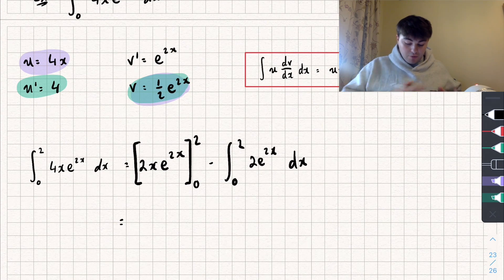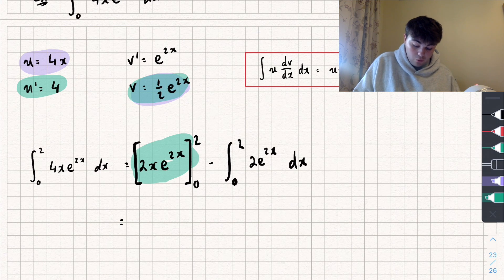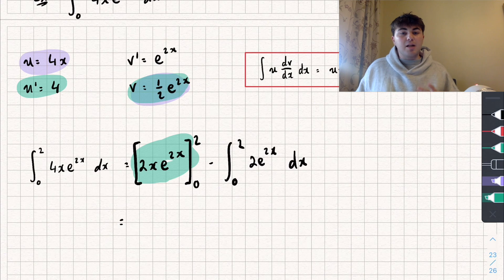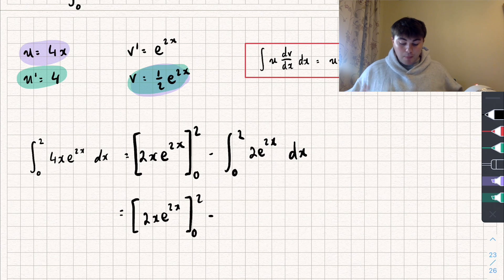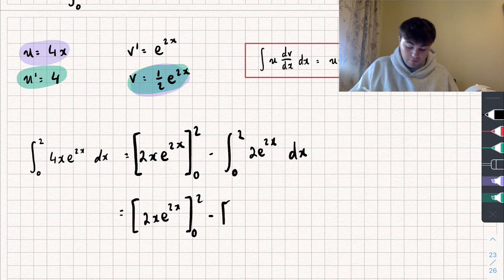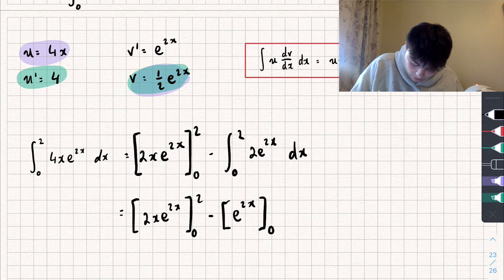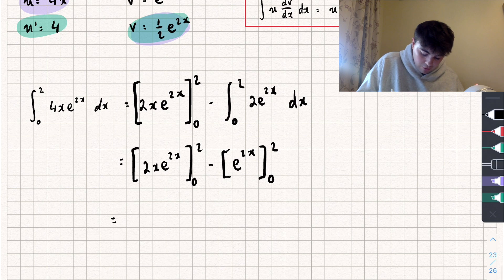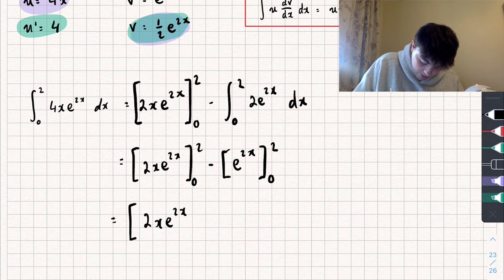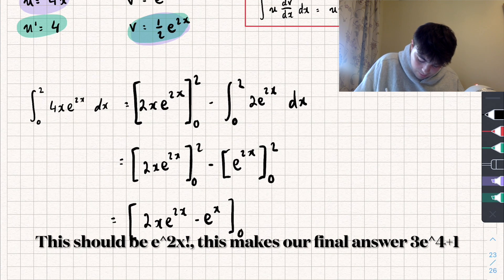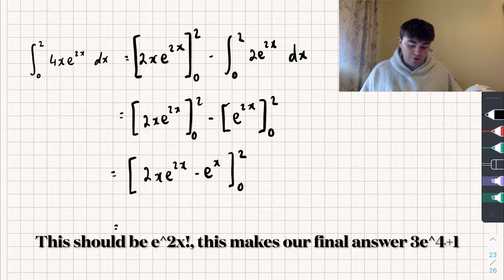I'm going to save evaluating the left expression until the end because there's a nice trick that makes it quicker. The remaining integral — 2 e to the 2x — integrates to: 2 times one half is 1, so just e to the power of 2x. We subtract e to the 2x between the limits zero and two. We can then push both expressions together: 2x e to the power of 2x subtract e to the 2x, evaluated between the limits zero and two.